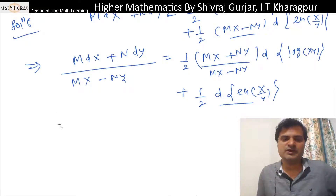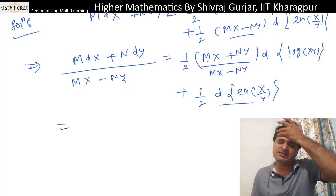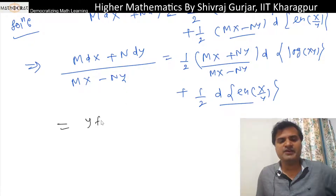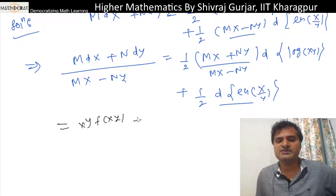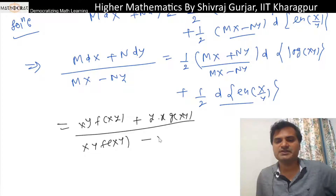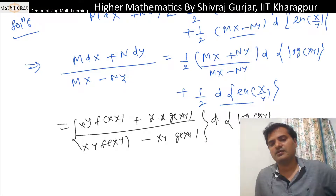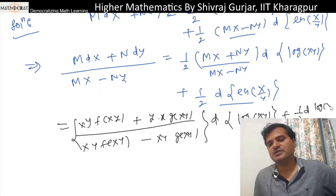So now let's see what to write. M·x will be x·y·f(x,y) — x is already there so it becomes x·y·f(x,y). Plus N·y — N is x·g(x,y), so we get x·y·g(x,y). And the difference Mx minus Ny gives x·y·f(x,y) minus x·y·g(x,y), multiplied by d(log xy).